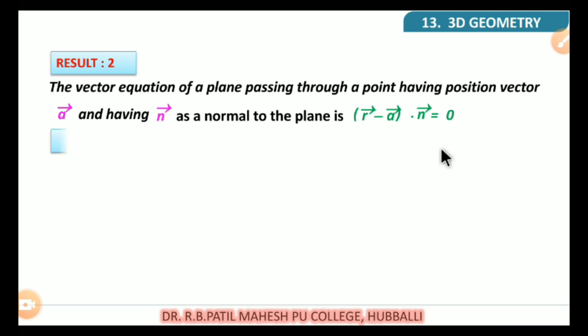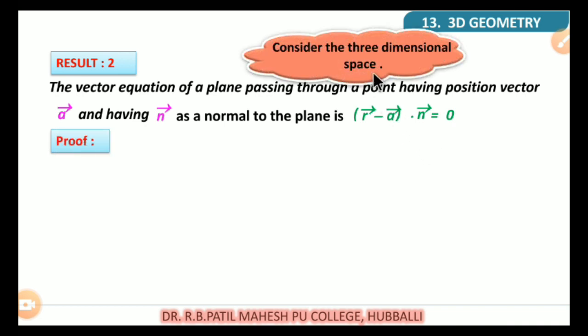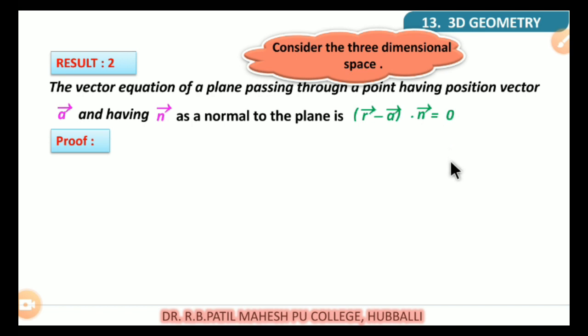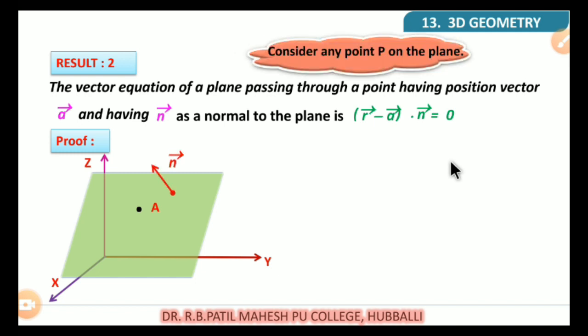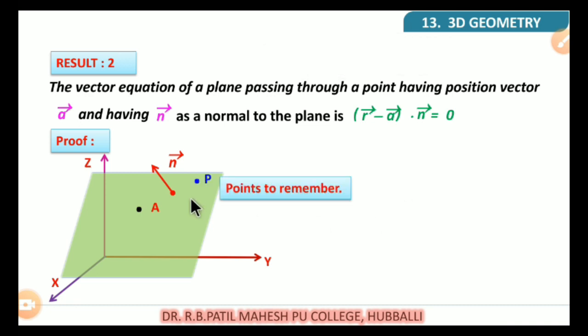Now consider the proof. Here we have to consider three-dimensional space which has x, y, z axes. Consider a point A on that plane, and also normal to the plane, that is n vector — meaning the normal is a vector which is perpendicular to the plane. Consider any point P on the plane.